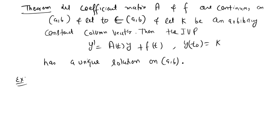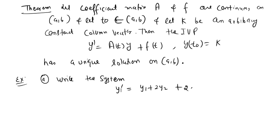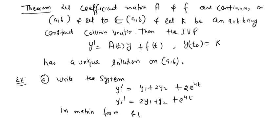Now I am taking one example. Part (a): write the 2 by 2 system — y1' = y1 + 2*y2 + e^(4t) and y2' = 2*y1 + y2 + e^(4t) — in matrix form, and verify the existence theorem by checking continuity of the matrix and right-hand side vector.